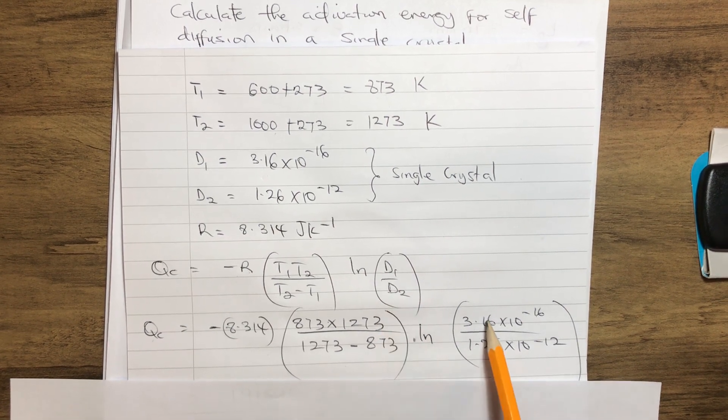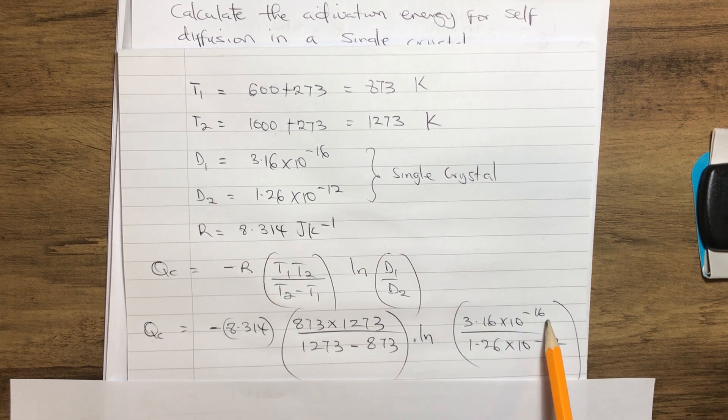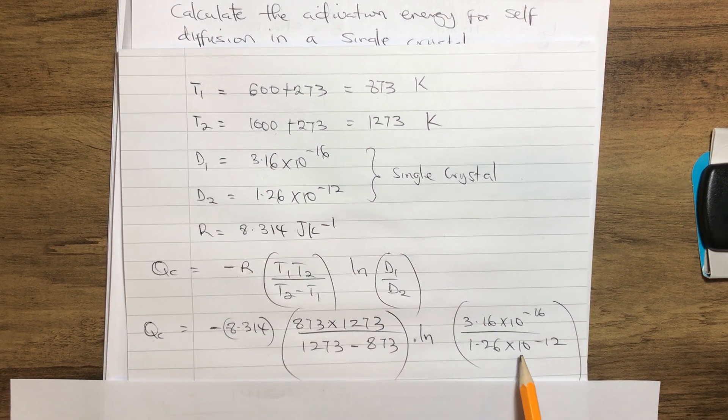D₁, which is 3.16 × 10^-16, over D₂, 1.26 × 10^-12.